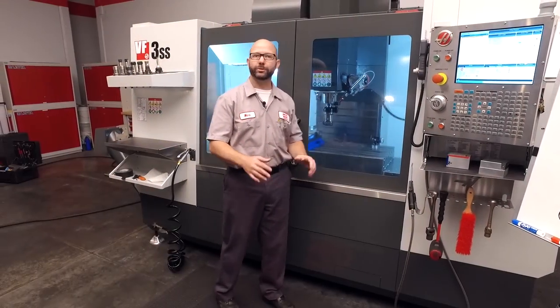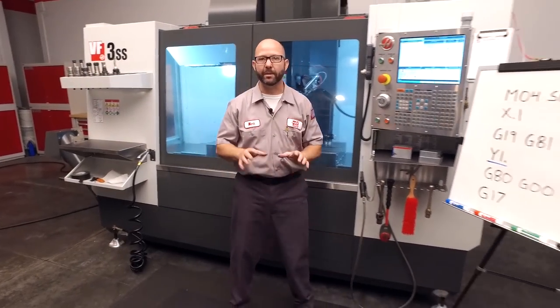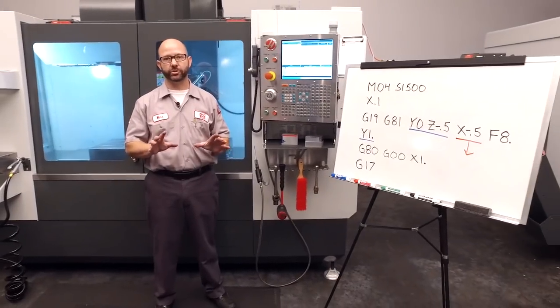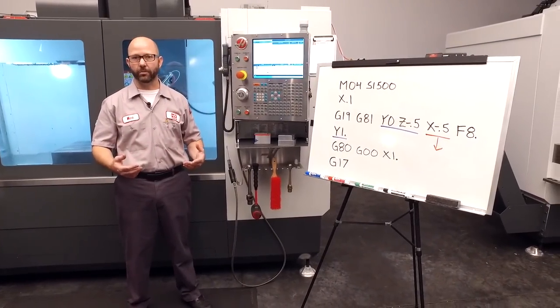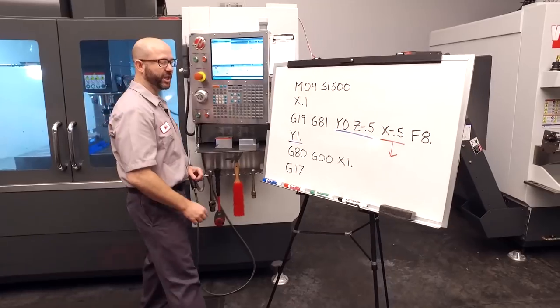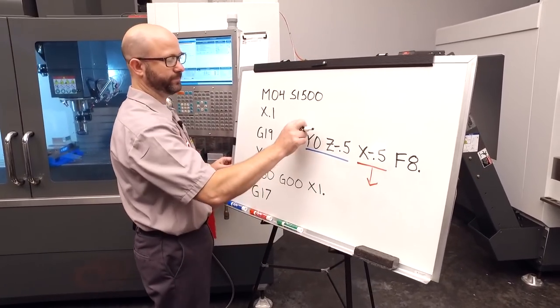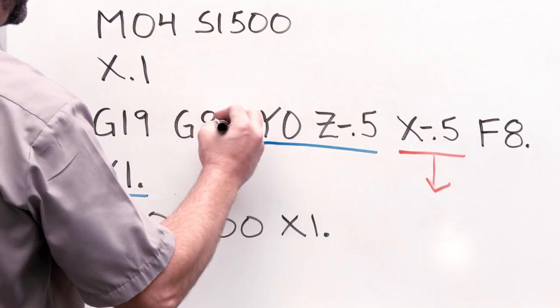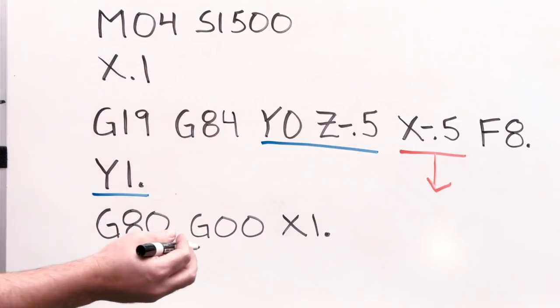Well, we drilled the hole. Now it's time to tap it. Now, remember, we're on a next-generation control. On a next-gen control, all we've got to do is change that G81 to a G84. And now we're tapping. That's it.